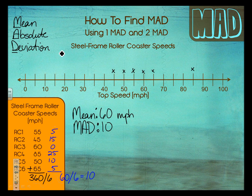The next thing I already know is that my mean was 60. I'm going to take a different color to show this — you're going to need to show your mean as a triangle. I chose green, but color doesn't matter. Just put a triangle to show the mean and line it up as exact as possible. My mean is shown by the triangle at 60 miles per hour.